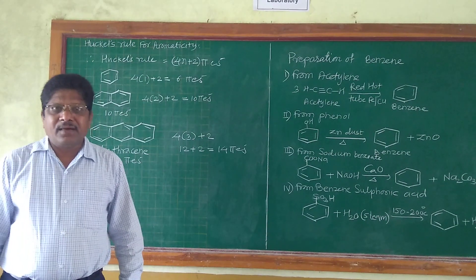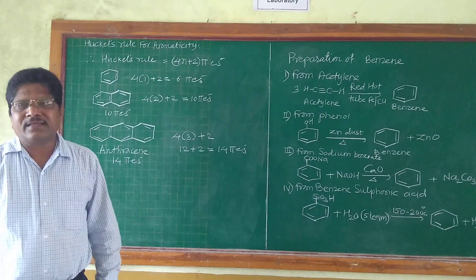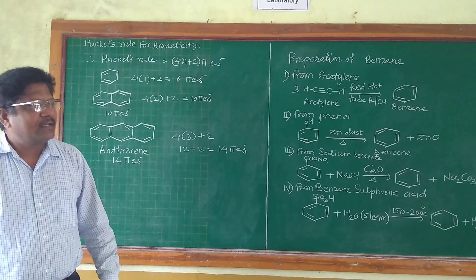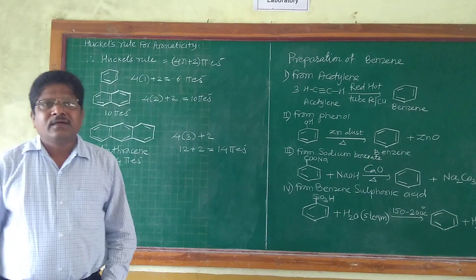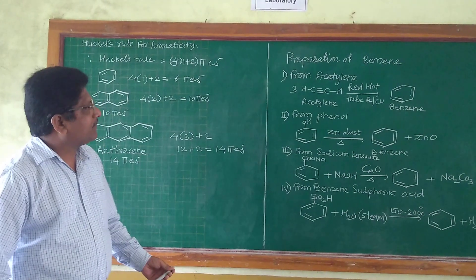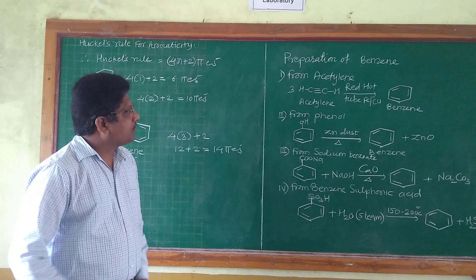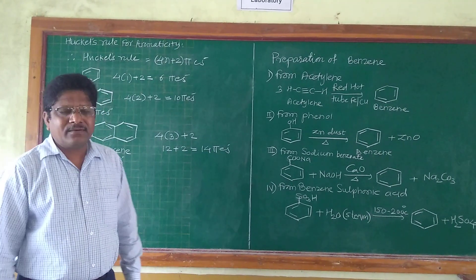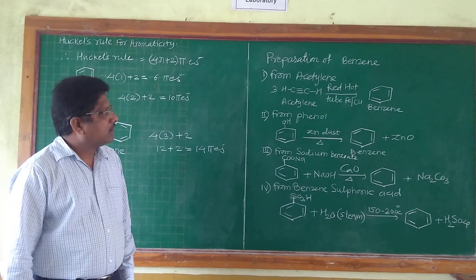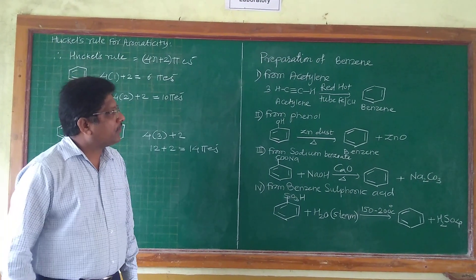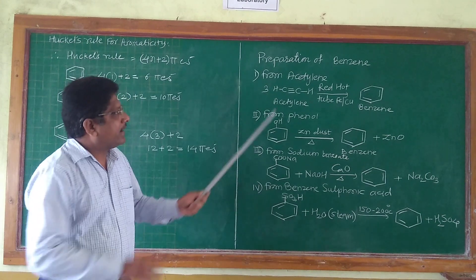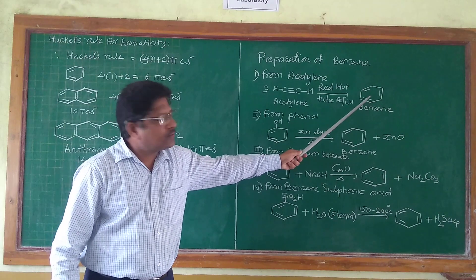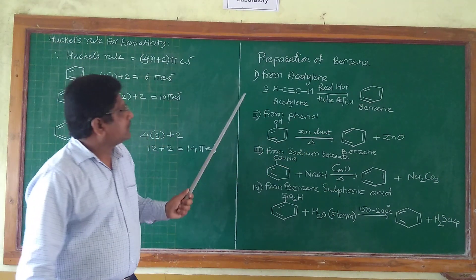Benzene can be prepared industrially by various methods. The first important method for preparation of benzene is from acetylene. In this method, acetylene gas is passed over a red-hot tube of iron or copper, and three molecules of acetylene get cyclized into a benzene molecule.